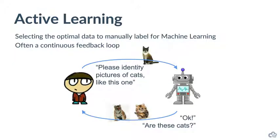For those of you who haven't encountered active learning before, the process looks something like this — optimally selecting data to manually label for machine learning, and when implemented well, it's often a continuous feedback loop. Imagine you want to identify pictures of cats. You're giving your machine learning algorithm thousands or ideally tens of thousands of examples. Active learning is when your machine learning algorithm, or a set of algorithms working with it, is able to choose which ambiguous items are the right ones for a human to provide feedback on. As in this example, the machine learning algorithm is confused by a tiger and a kitten, which are maybe not prototypical cats.